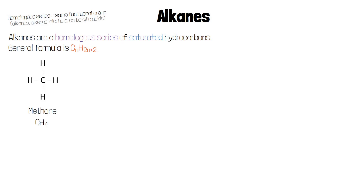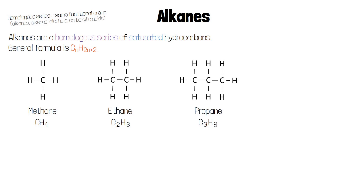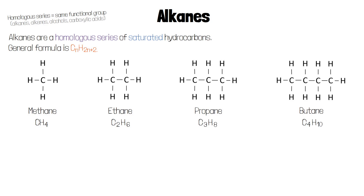The first four alkanes are methane CH4, ethane C2H6, propane C3H8, and butane C4H10.